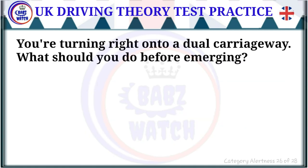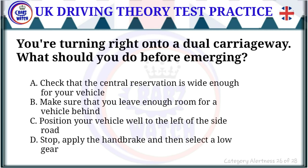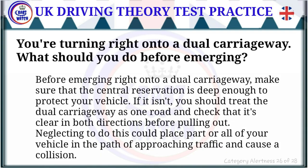Question 26 of 28: You're turning right onto a dual carriageway. What should you do before emerging? The correct answer is: check that the central reservation is wide enough for your vehicle. Make sure the central reservation is deep enough to protect your vehicle. If it isn't, treat the dual carriageway as one road and check it's clear in both directions before pulling out, to avoid placing your vehicle in the path of approaching traffic.